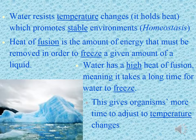Water resists temperature change — it holds heat. It has a high specific heat value, which is why it takes a long time for your pool to get warm in the summertime, and it stays warm even after it gets cold outside. This promotes stable environments, which is called homeostasis.